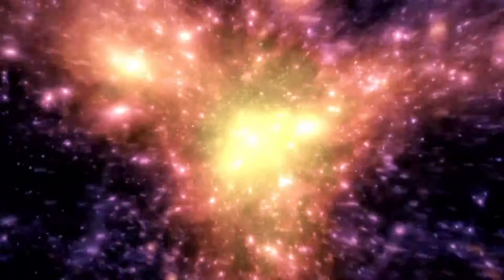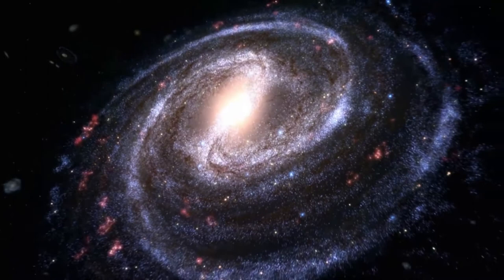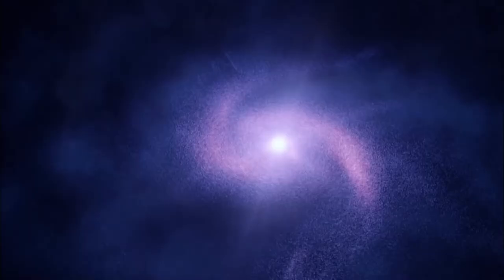For instance, according to standard physics, stars at the edges of a spinning spiral galaxy should travel much slower than those near the galactic center, where a galaxy's visible matter is concentrated.